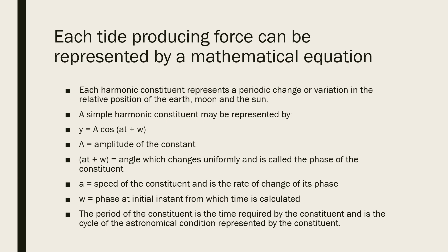The period of the constituent is the time required by the constituent and is a cycle of the astronomical condition represented by the constituent. Here is the equation based on the interaction or the periodic change that happens in the relative position of the earth, moon, and sun, which also has an effect on the tides. Knowing this theory behind the practical calculation of simple harmonic motion is essential for you guys to know.